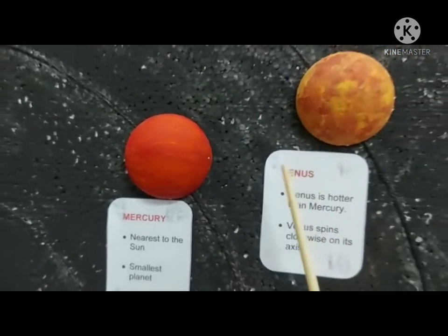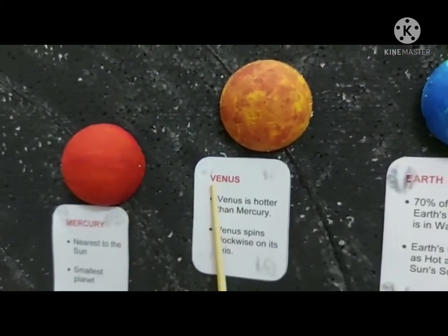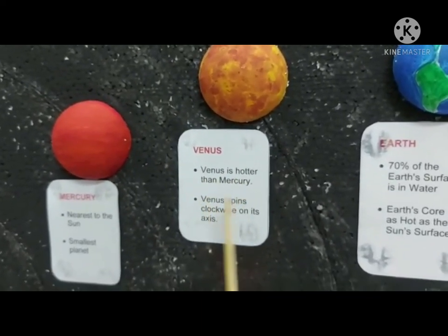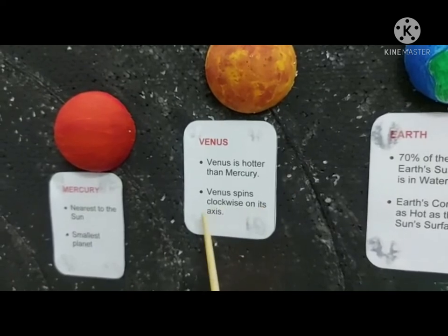Let's look at the Venus planet. Venus is hotter than Mercury. Venus spins clockwise on its axis.